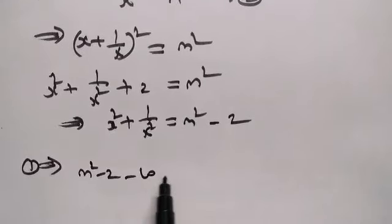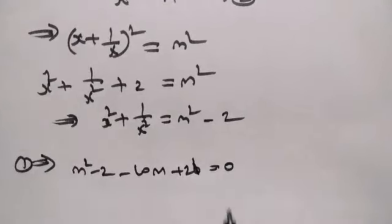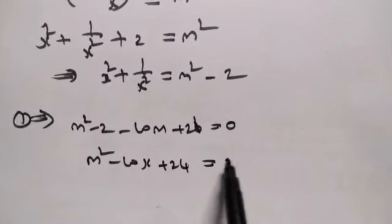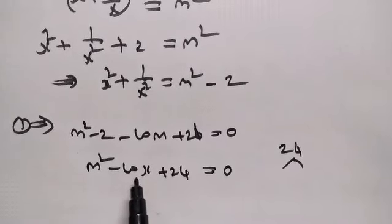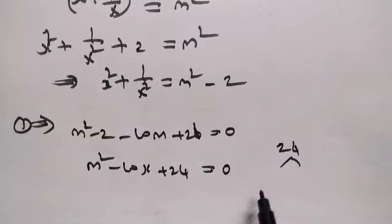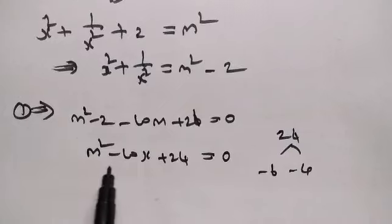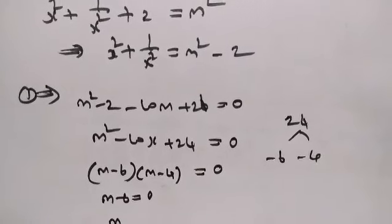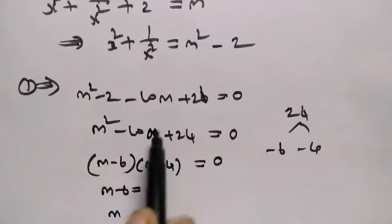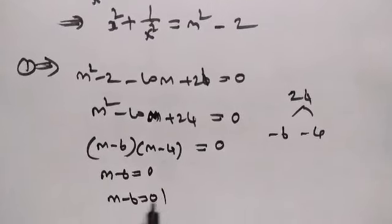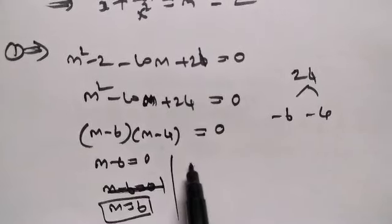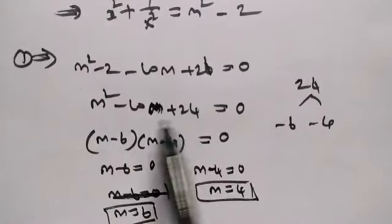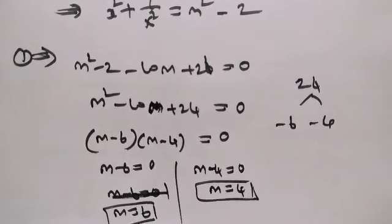Substituting: m squared minus 2 minus 10 into x plus 1 by x which is m, plus 26 equal to 0. So m squared minus 10m plus 24 equal to 0. This is a quadratic equation. Factoring: m minus 6 into m minus 4 equals 0. So m equal to 6, and m equal to 4.